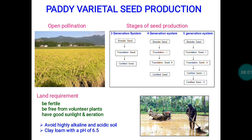After deciding the number of generations for multiplication of a paddy variety, we must address agronomic aspects. The first is land selection. The thumb rule is that the land selected for the seed crop this season should not have been raised with another variety of the same crop in the previous season. If it was, we must follow a strategy to eradicate the previous season's seed material — volunteer plants.